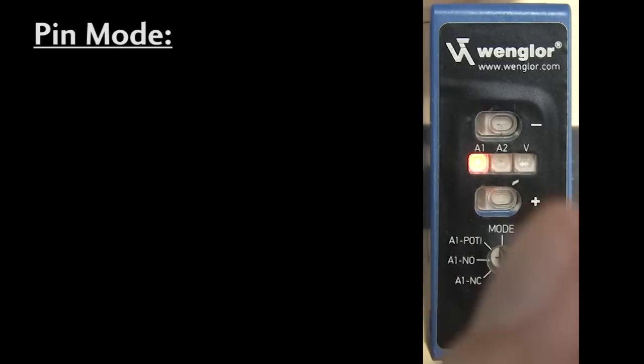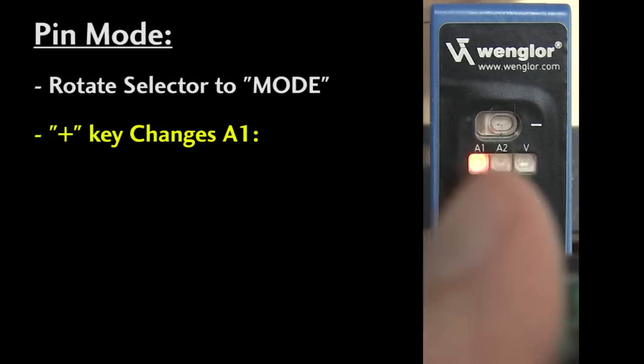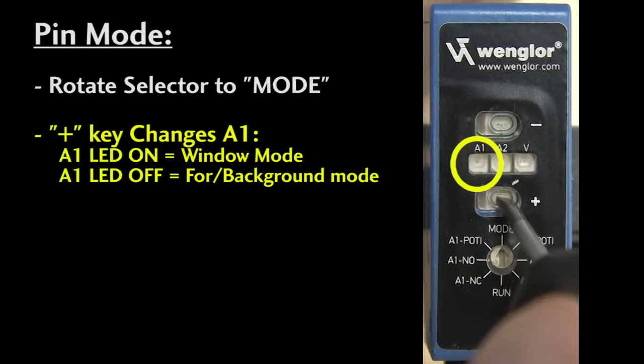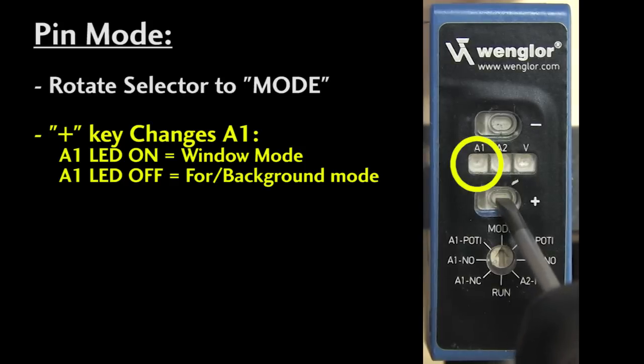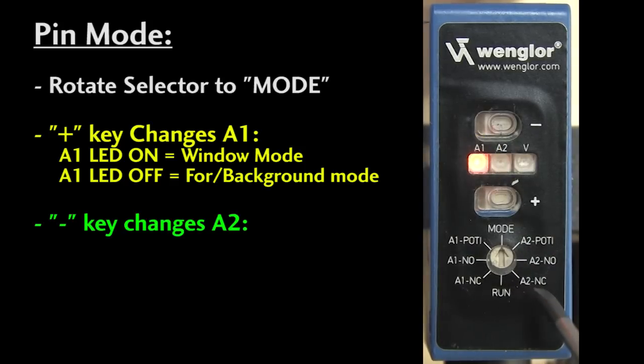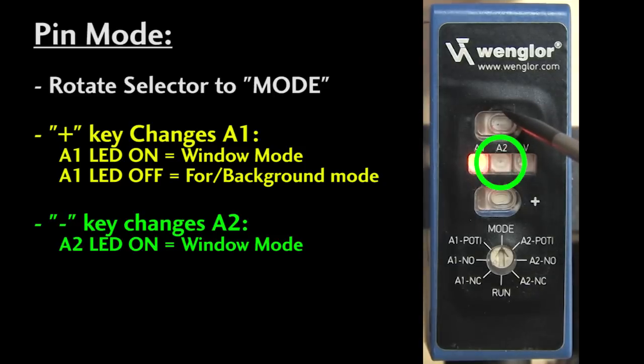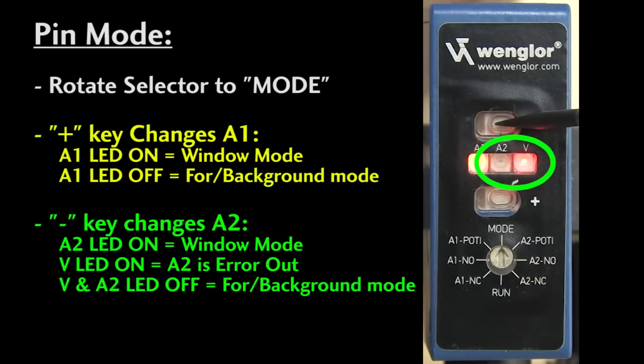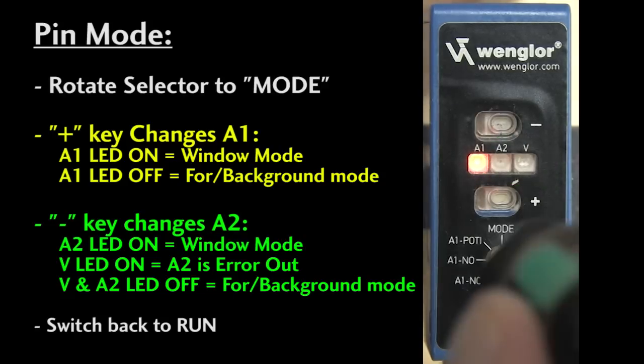Let's try it. Rotate the selector to mode. The plus key changes A1 between window mode – the LED on – and foreground background mode – the LED off. Let's put A1 in window mode. The minus key changes A2. If A2 is lit, it's in window mode. If the red V is lit, that means that A2 is an error out signal. And if both V and A2 are off, A2 is the default foreground background mode. We'll leave A2 there as a foreground background detection. Switch back to run and you've set the mode.